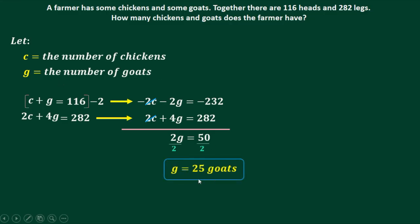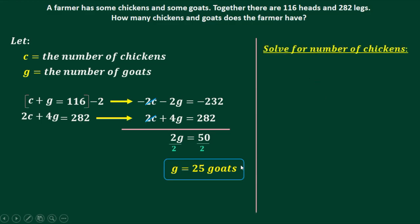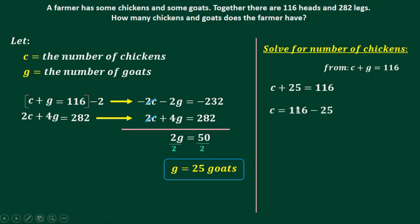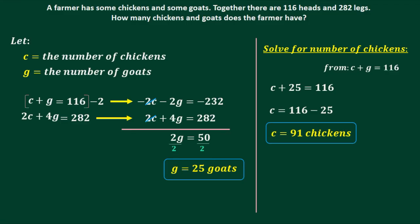To solve for the number of chickens, substitute G = 25 into the first equation, which is the simplest: C + G = 116. Substituting 25 for G and transposing: C = 116 minus 25, so C = 91. Therefore, the farmer has 25 goats and 91 chickens.